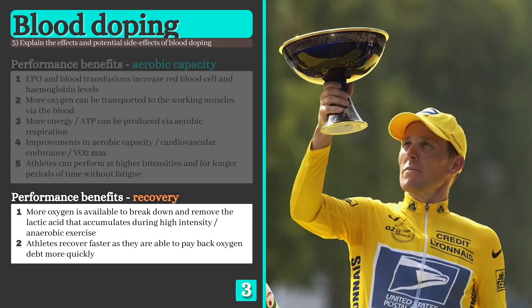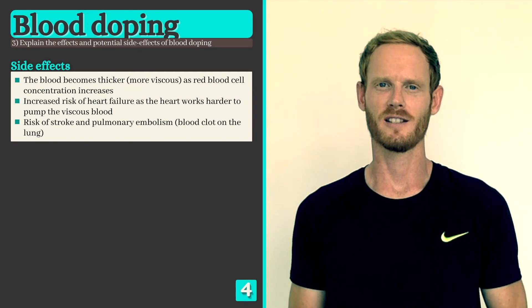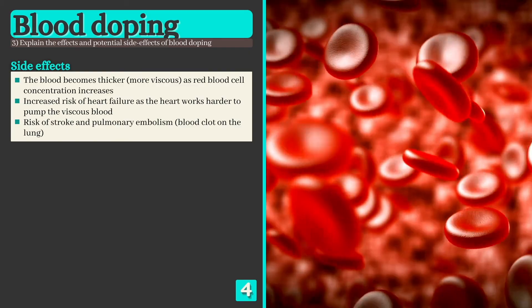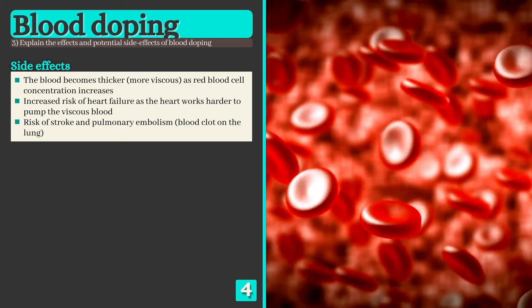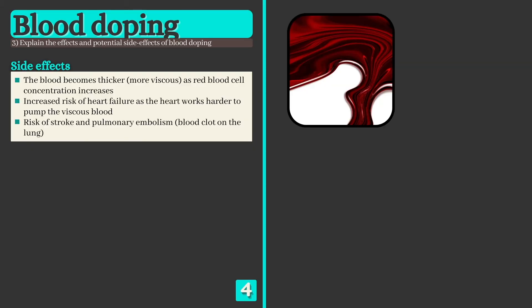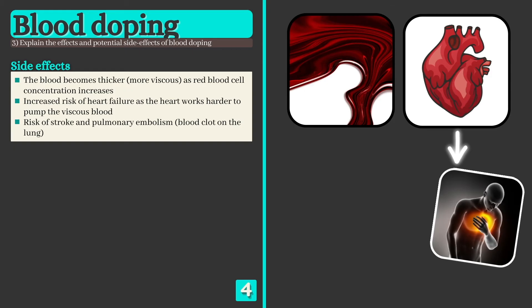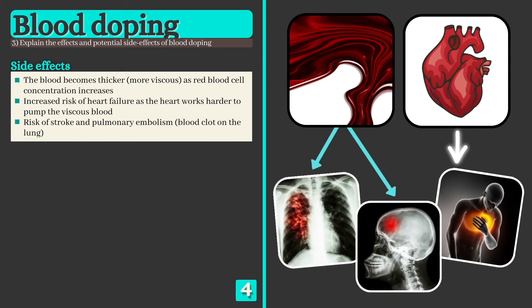So what about the potential side effects or health risks of blood doping? Well, as red blood cell concentration increases in response to both EPO injections and blood transfusions, the blood becomes thicker or more viscous, meaning the heart needs to work harder to pump the blood around the body. This of course increases the risk of heart failure, but strokes and pulmonary embolism, which is a blood clot on the lung, are also not uncommon.